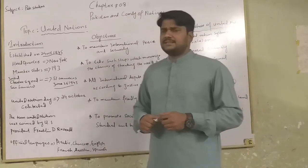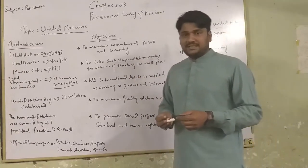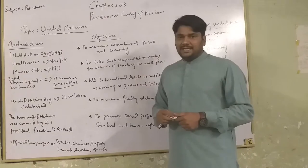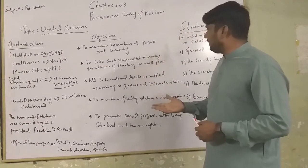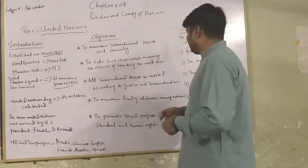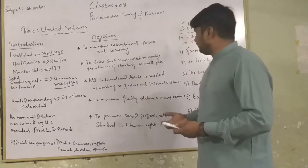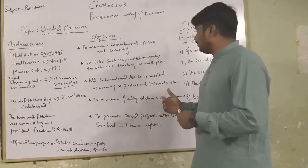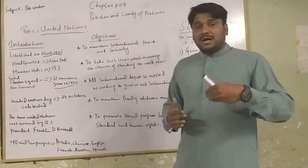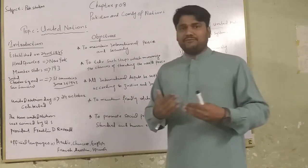The objective of the United Nations Charter and the United Nations Commission is first to maintain international peace and security. This means the United Nations takes steps to minimize the chances of threatening world peace and to reduce disputes that threaten global stability.